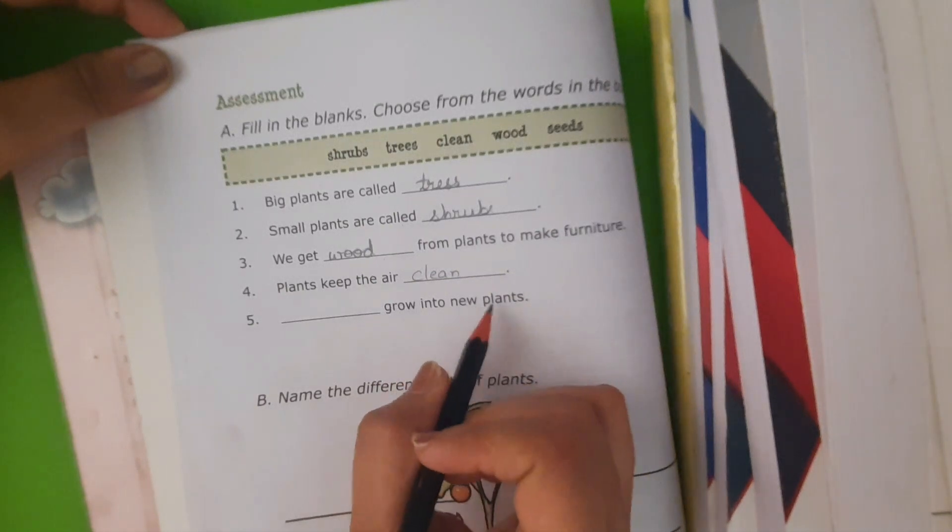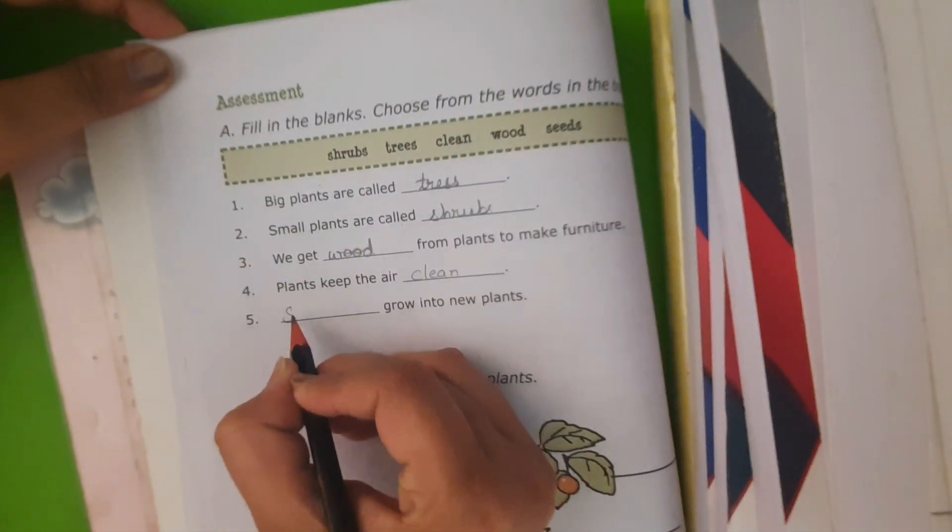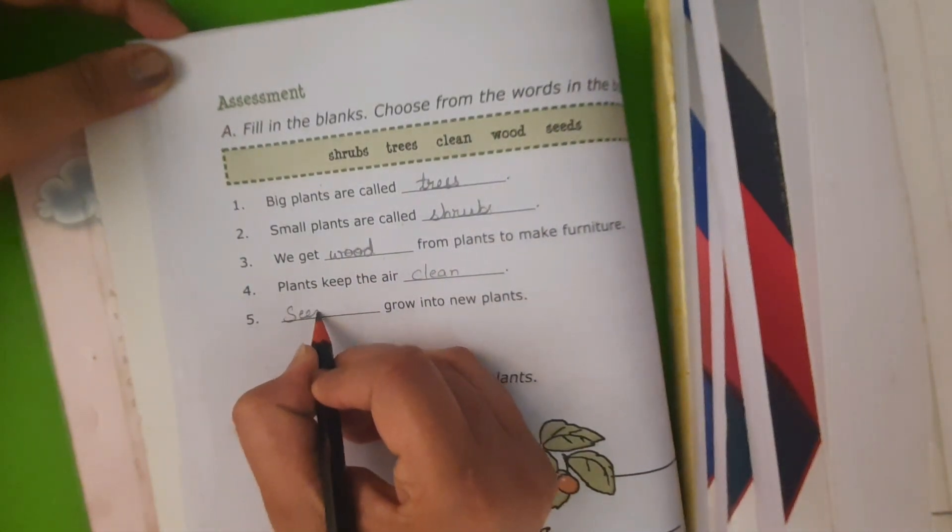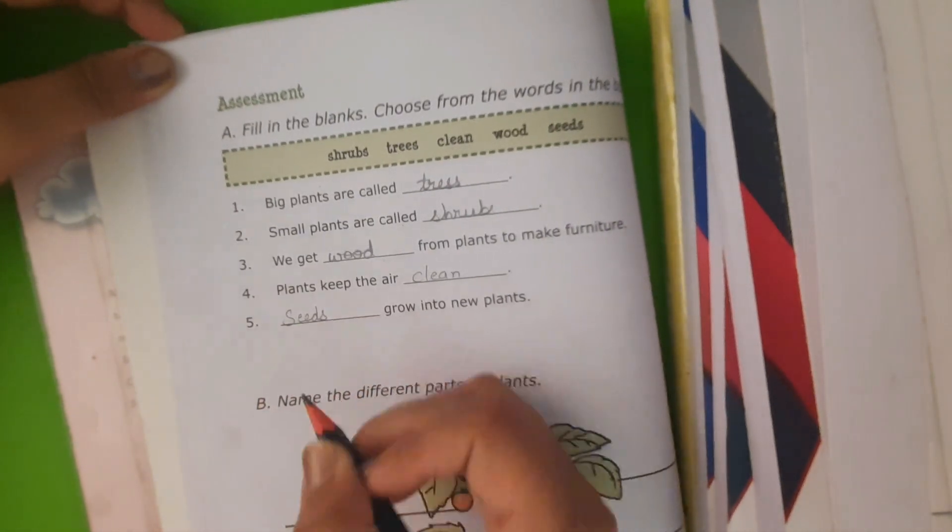Seeds grow into new plants. Which part of a plant grows into a new plant? That is seeds.